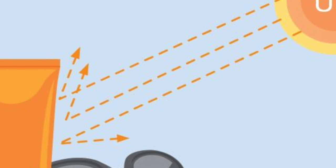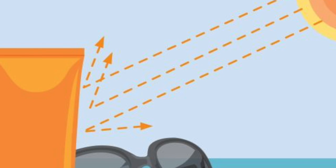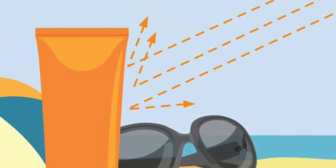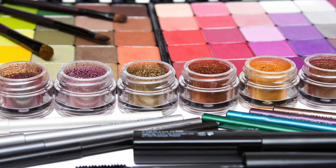Oxybenzone is both a UVA and UVB blocker, and it is significantly absorbed dermally, making it an extremely successful organic chemical to use in sunscreen and cosmetics.